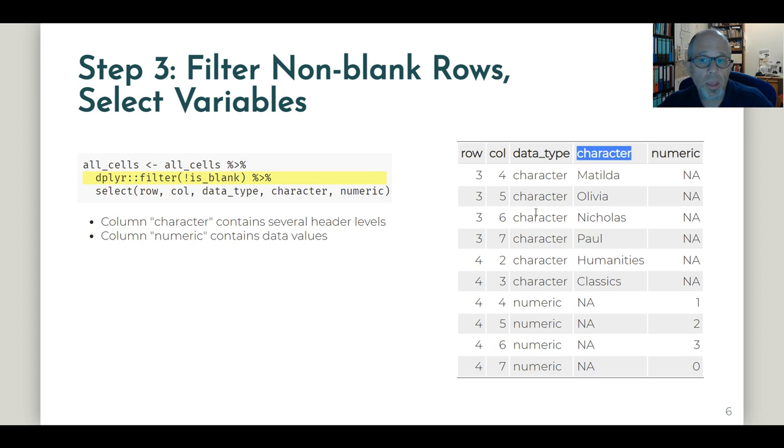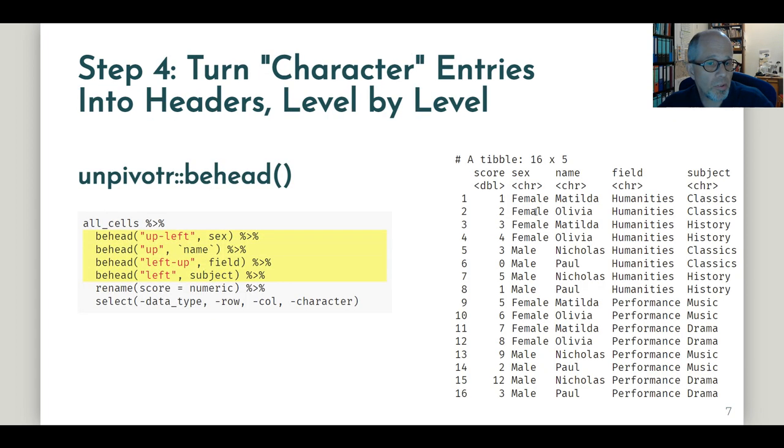The key step is really the following: Step four, turning character entries into headers level by level. There's one key function that we can use repeatedly here. It's the behead function from the unpivotr package.